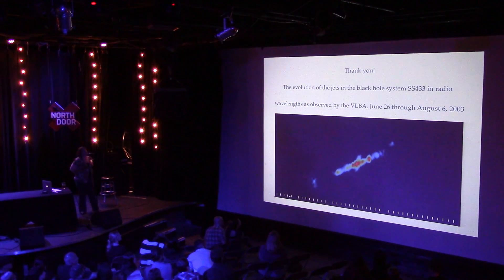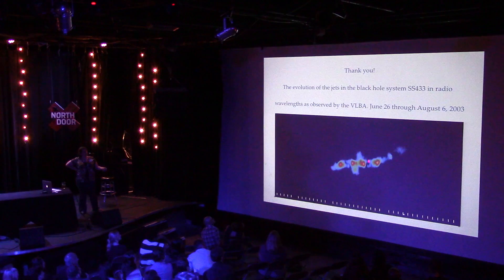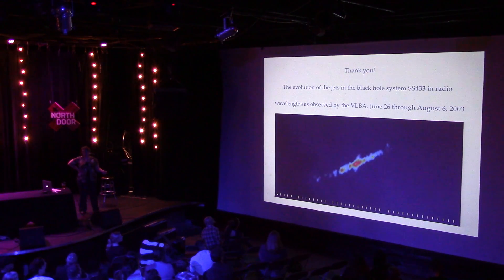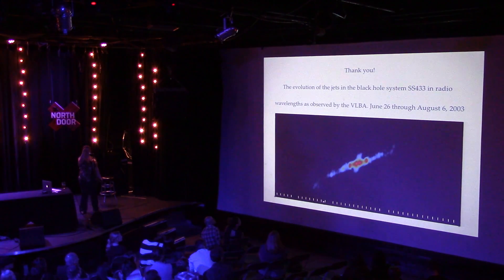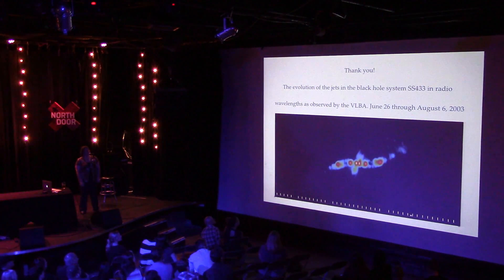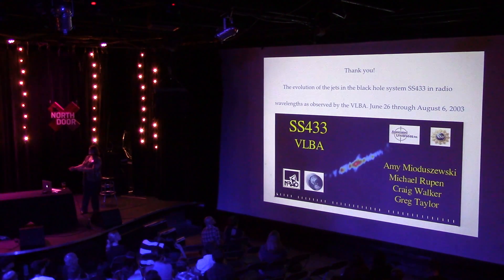I'll leave you with a movie — a radio image of the jets from SS433, a black hole system. You can see the disc and the jets are quite blobby, not coming off in a nice straight line. The jets are actually precessing — not just shooting in one direction but twisting, forming a corkscrew pattern as they come off. That's a fun radio observation of one of these systems. Thank you very much.